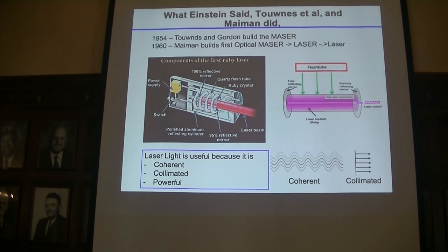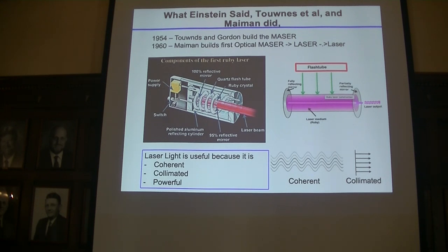So, resonators. In 1916, Einstein came out with a theory for a resonator. He's talking about how you can pump energy into a species — a species could be a molecule or an atom. And basically what you're doing is, in this case, the photon hits.